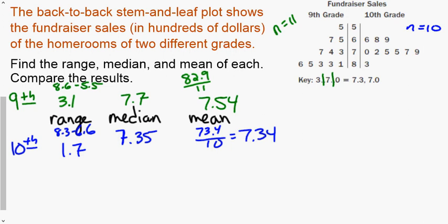When you do tenth grade you should get 1.7 for the range, 7.35 for the median, and the mean is 7.34.